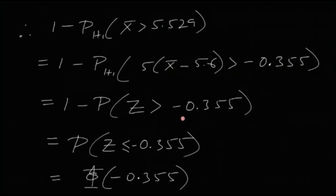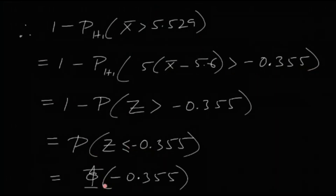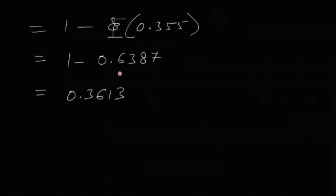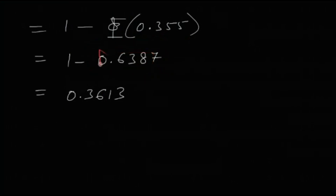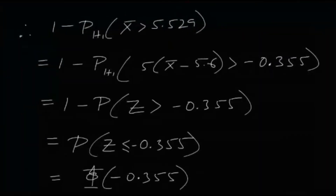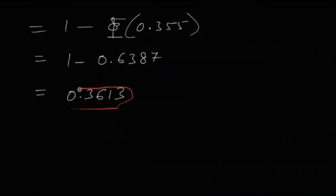This gives 1 minus P(Z > −0.355), which equals P(Z ≤ −0.355) = Phi(−0.355) = 1 − Phi(0.355). Since Phi(0.355) = 0.638 is given in the question paper, the type 2 error probability is 1 − 0.638 = 0.3613 (approximately). So the answer is 0.3613.